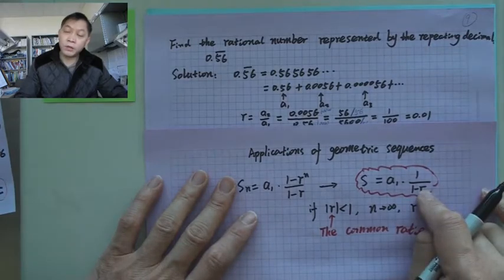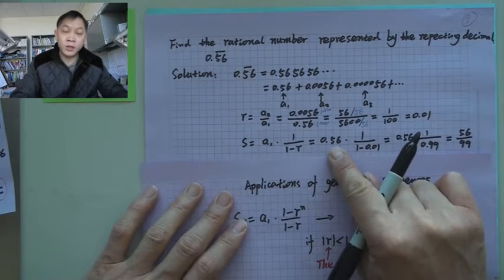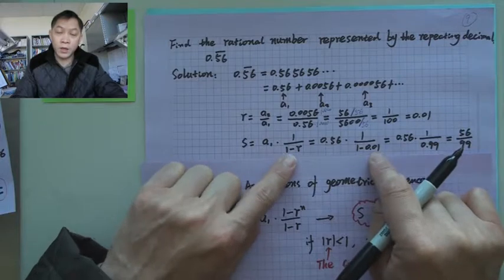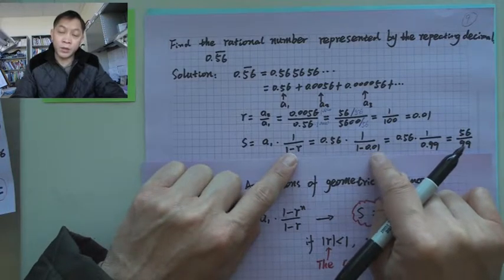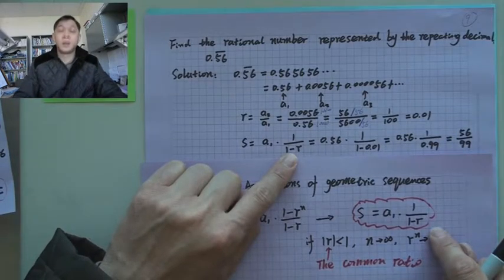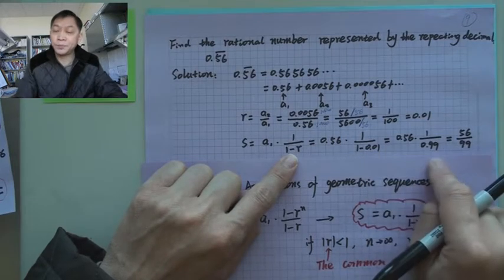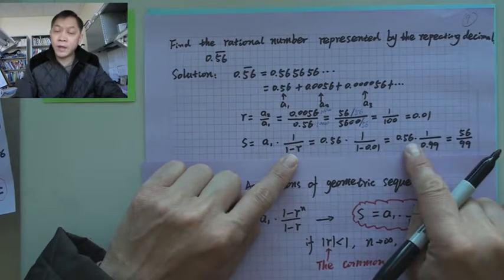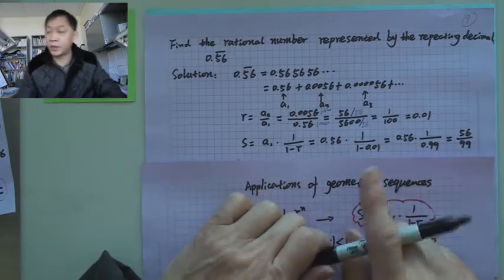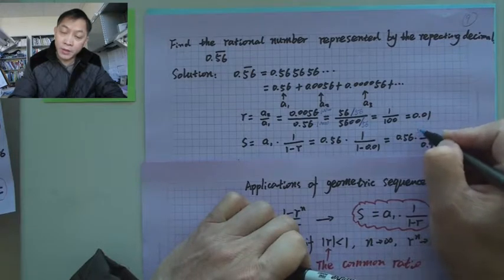So the initial term we know is 0.56, and r we know is 0.01. So it will be the initial term 0.56 times 1 over 1 minus r, and r is 0.01. All right, and then there's 0.99 for denominator, and then there's 56 over 99, because both numerator and denominator are multiplied by 100.